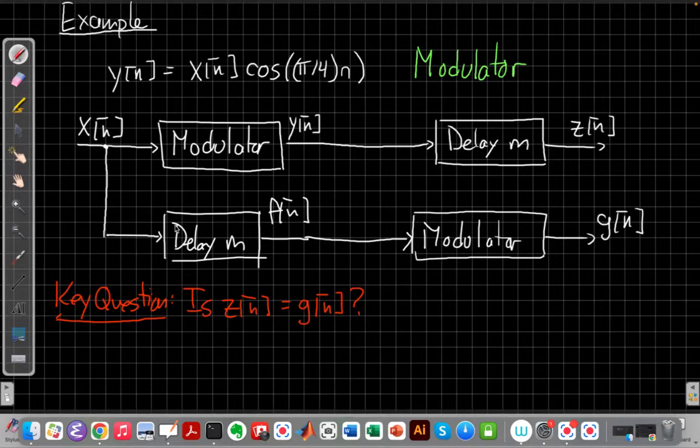Are these two outputs the same? That is do I get the same output whether I modulate first and then delay or delay then modulate? And the only way we can answer that question mathematically is we have to sort of solve this almost like a logic puzzle working backwards from z and g for each one of them to get it in terms of x[n].